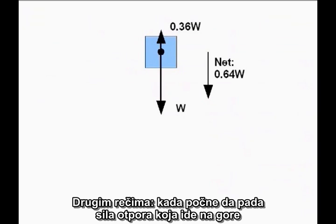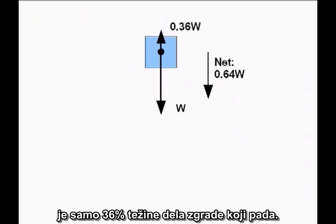In other words, once it starts falling, the upward resistive force is only 36 percent of the weight of the falling section of the building.